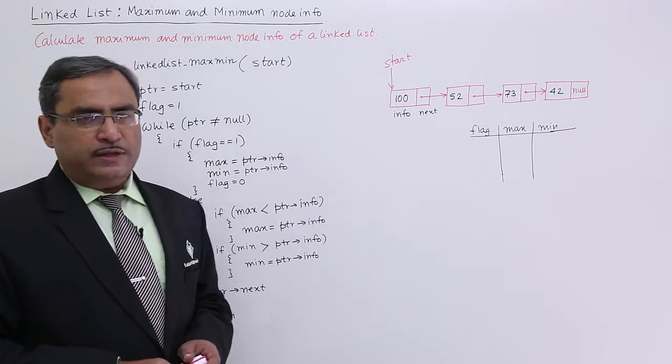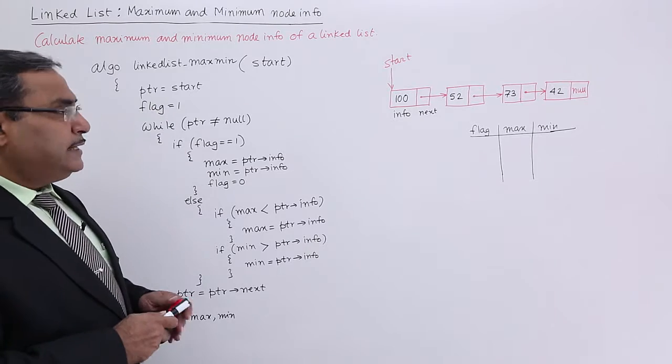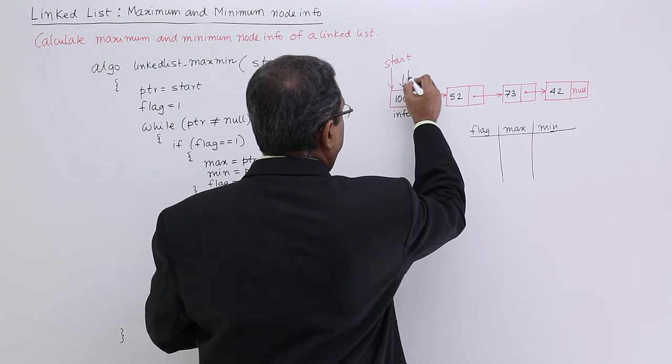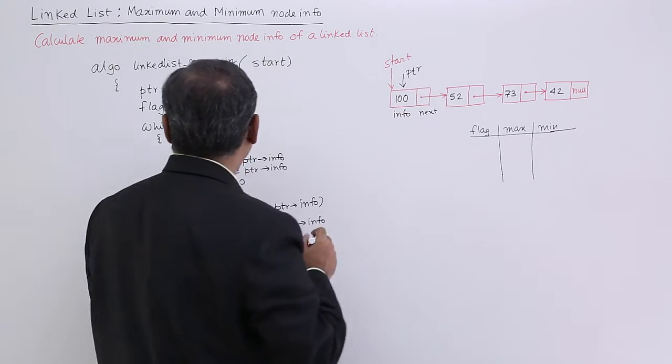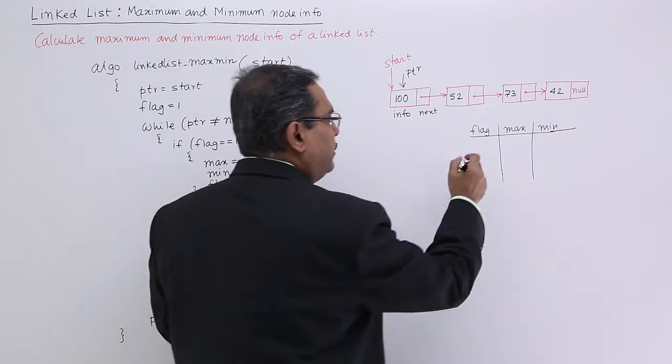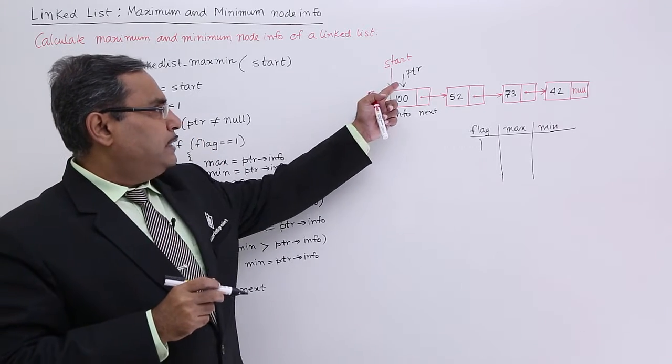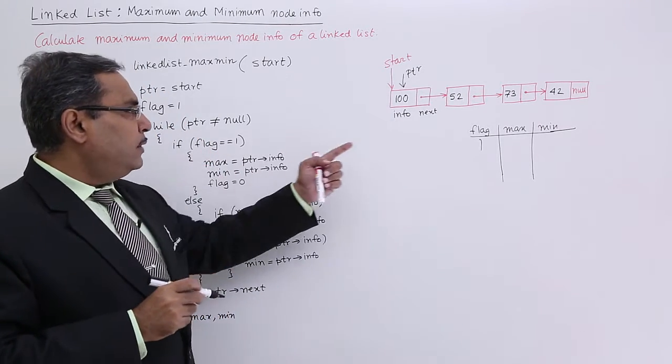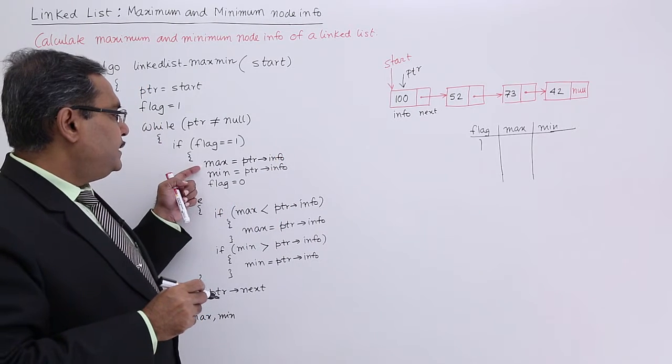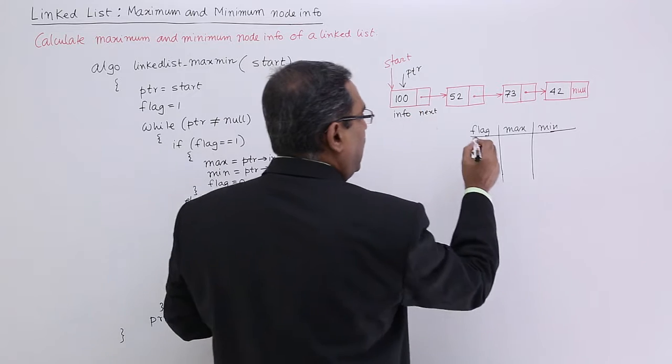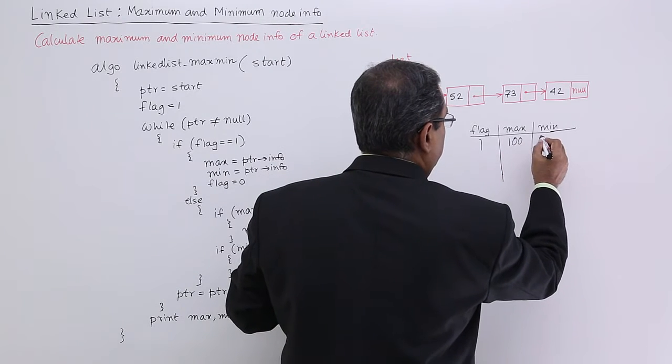If you do the tracing here, it can be traced very easily. Ptr is equal to start, so ptr will be pointing to this particular location. Flag is equal to one, so I shall go into this loop. Ptr is not equal to null, flag is equal to one, so initialize max and min and make flag equal to zero. 100 is the info of the first node, so that will be coming to max and min.